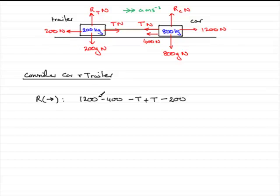So this is our resultant force that acts on the car and trailer. And that resultant force is equal to the mass times the acceleration. The mass being the total of 800 and 200 here. So in other words, 1000 kilograms. And that's times the acceleration A.